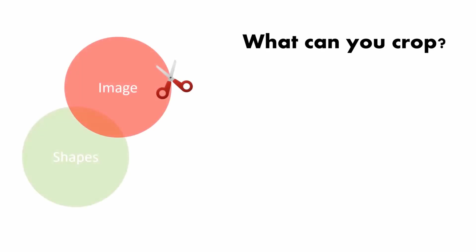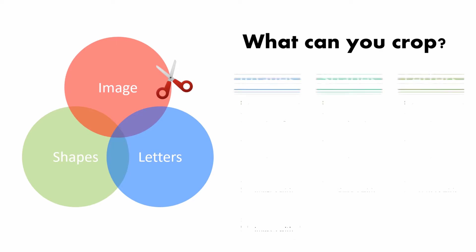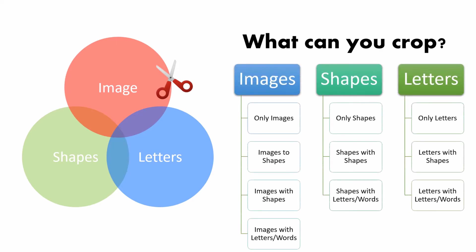The basic objects that can be cropped are images, shapes, and letters. In this video, I'm going to show you how to use these basic objects to crop so you can achieve more customized images or shapes. The list here shows all the techniques that we are going to see today. Images can be cropped into shapes or cropped with shapes. Likewise, we can do the same with shapes and letters.